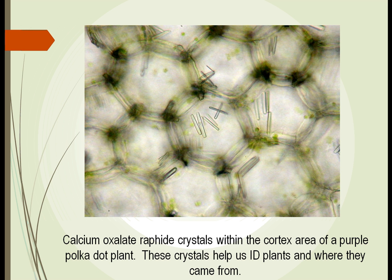Another way is to look under the microscope, where we can see different crystals within the areas of the cells. In this particular case, we see calcium oxalate — crystals that certain plants have that very, very slowly dissolve over time. So if we're looking in a fire pit or a garbage heap and we find cells with these crystals, they can help us identify the plant and give us an idea of where they came from.